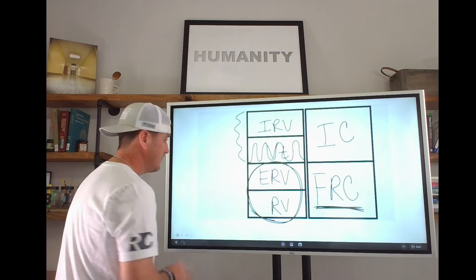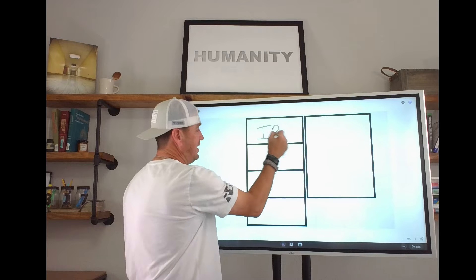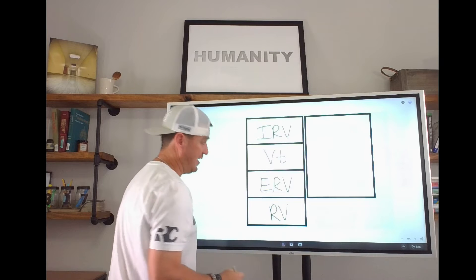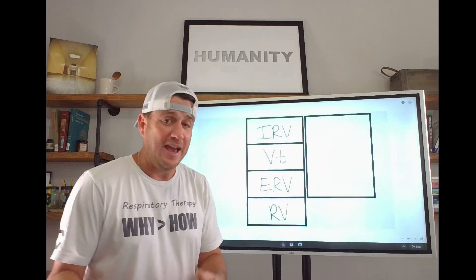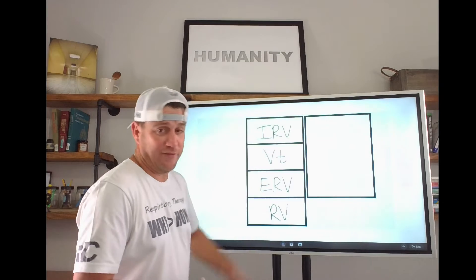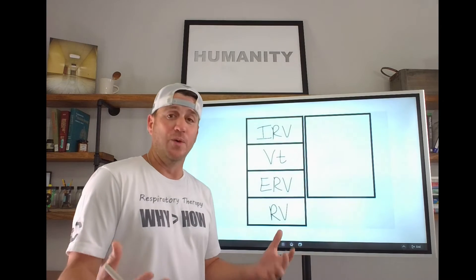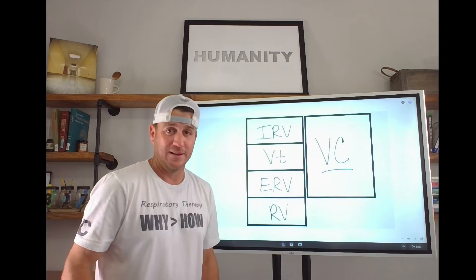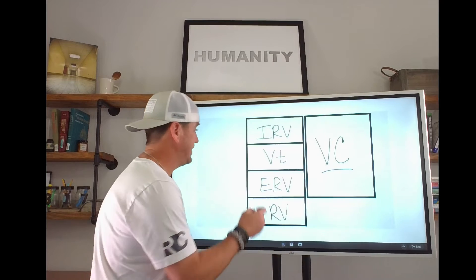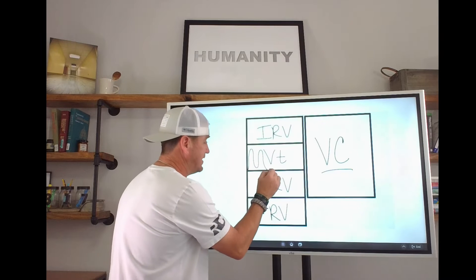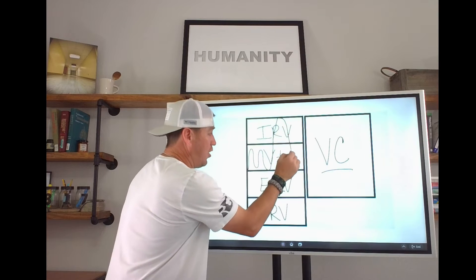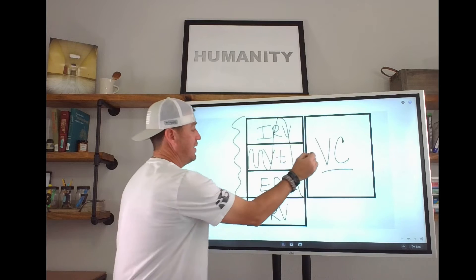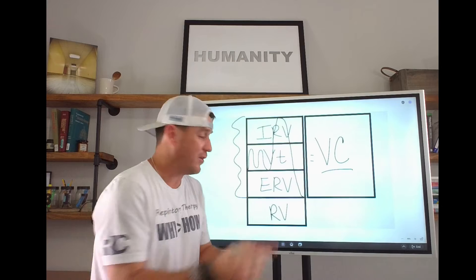We have IRV, tidal volume, ERV, and RV — those are our volumes. There is a capacity made up of three of our volumes, and that is VC, also known as vital capacity. Vital capacity is: if we're breathing normally at tidal volume and we breathe in as deep as we can to IRV, and then blow it all the way back out until we can't blow out anymore — those three together equal vital capacity.